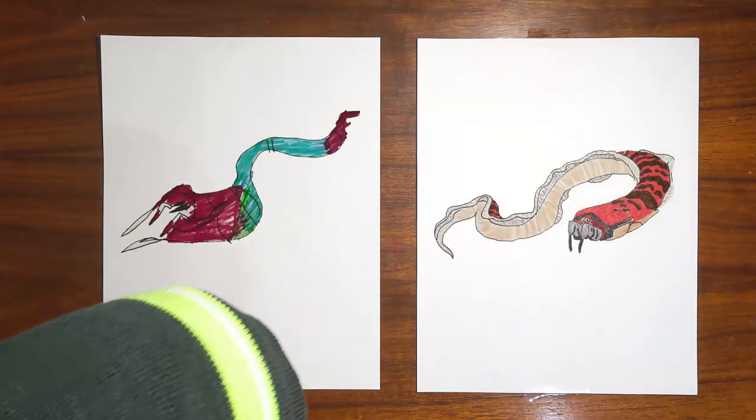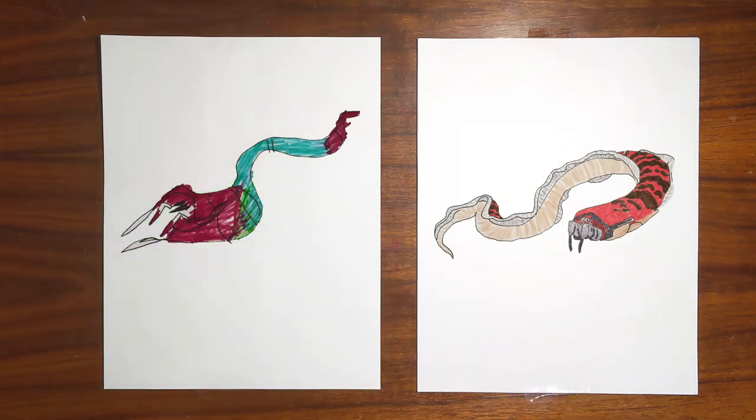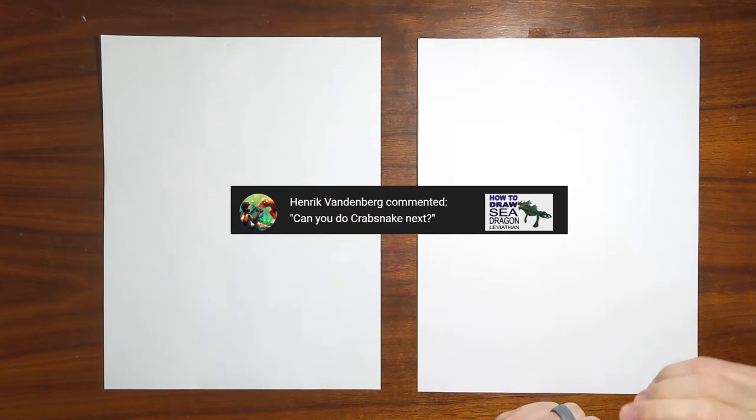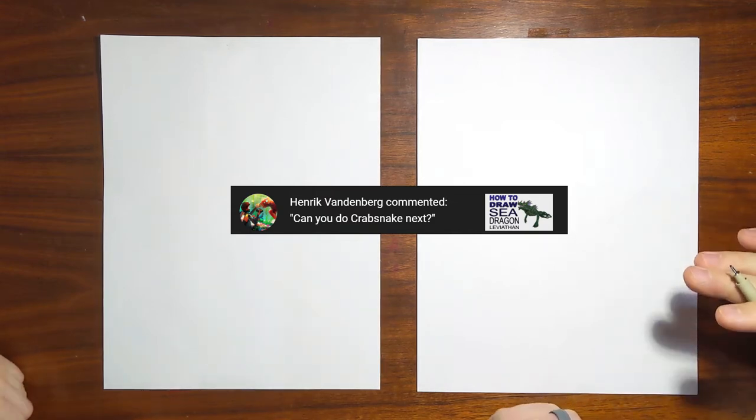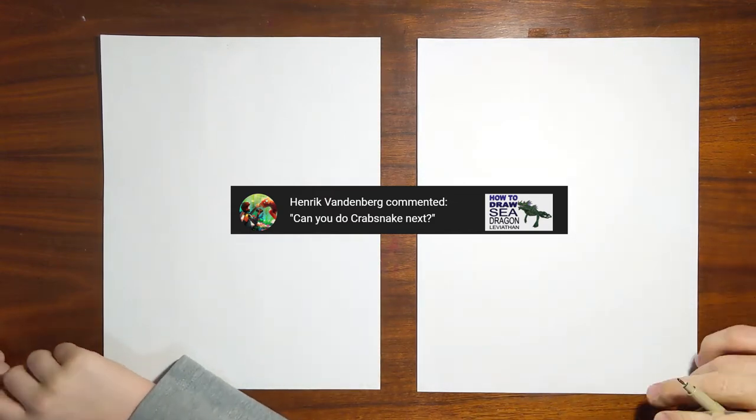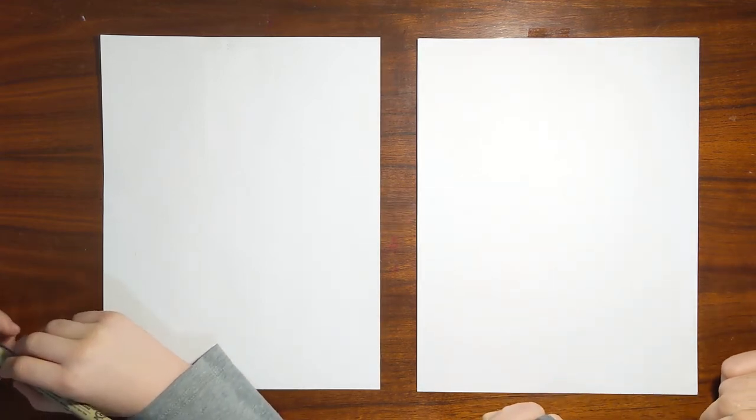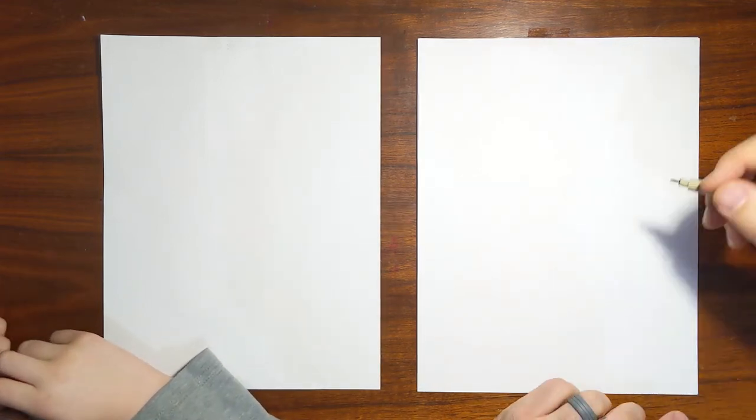Here we go with our crab snake. Now this one, Maxie, was a suggestion by Henrik Vandenberg. Who the heck is he? He's somebody who commented on our sea dragon, Leviathan, and asked if we would do crab snake. And I said, absolutely. So here we go.